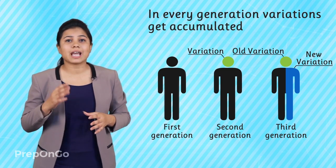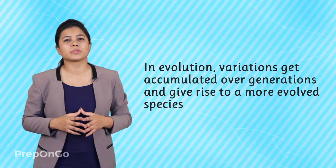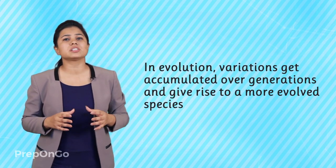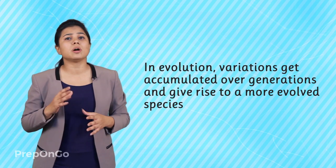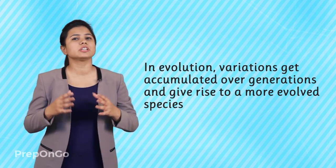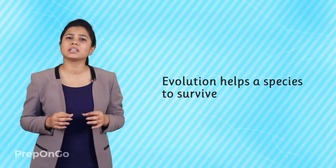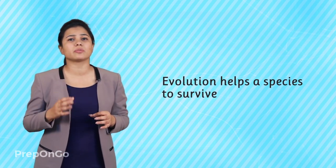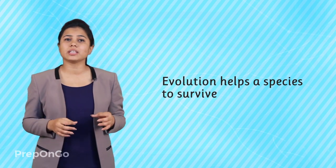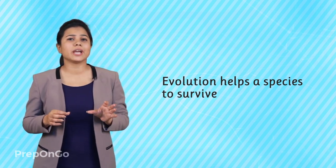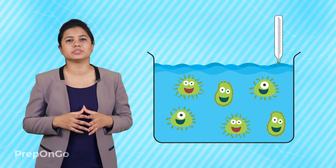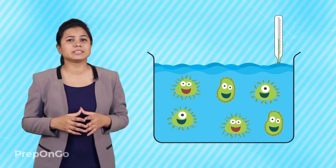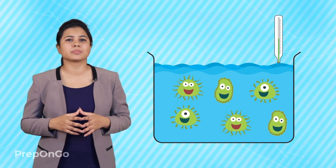This is the basic process that happens in what we call evolution. Over generations, variations get accumulated and give rise to a more evolved species. Evolution basically increases the chances of survival in the environmental conditions — or we can say that the species evolve to survive in changed environmental conditions. We have studied the importance of variation in the chapter on reproduction, where we saw the example of bacteria living in temperate waters. We will again take the same example to understand the process of evolution.